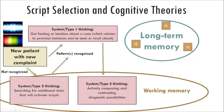If I don't recognize the pattern, I'm going to be using a lot of system two thinking upfront, searching for additional data that will activate scripts. Some patterns will start to emerge — I may not recognize this as peptic ulcer disease specifically, but at least I recognize a dyspepsia script and start looking for different illnesses that incorporate dyspepsia.